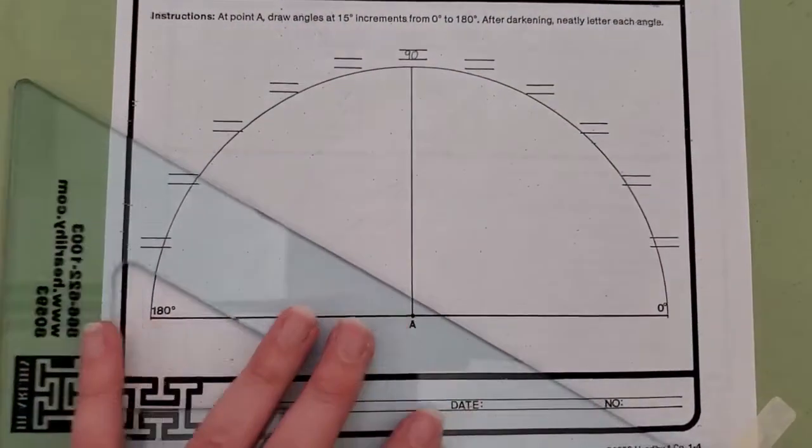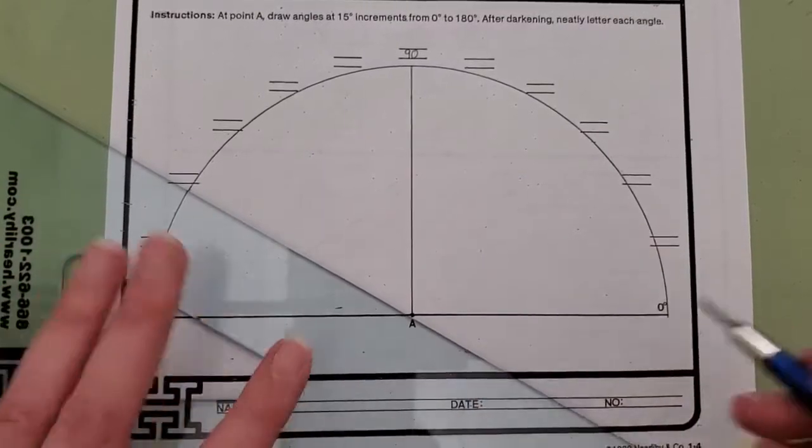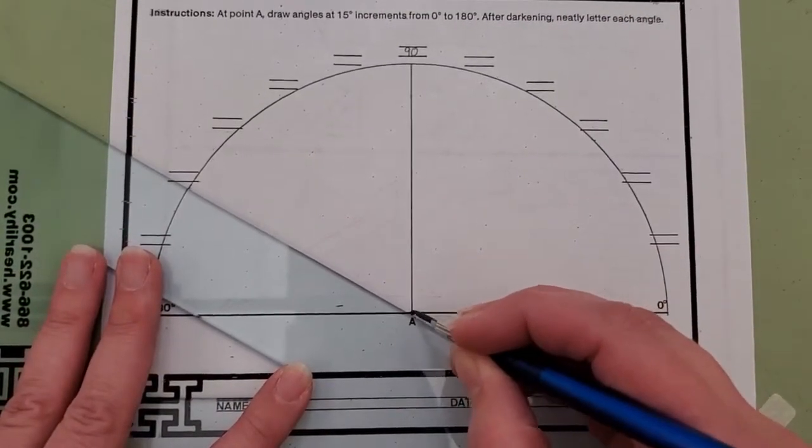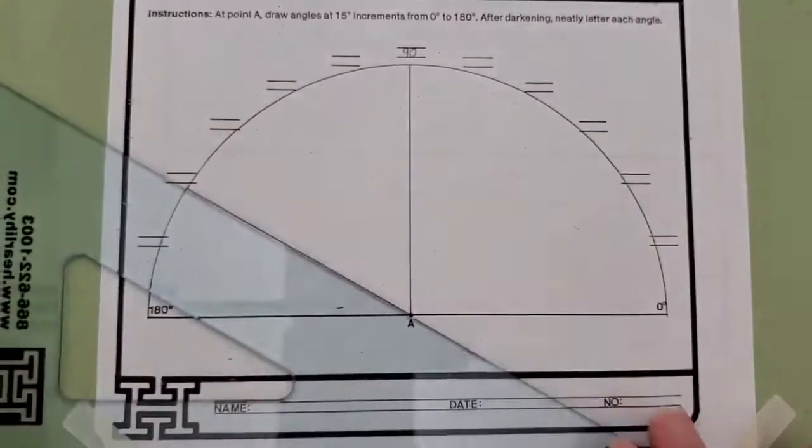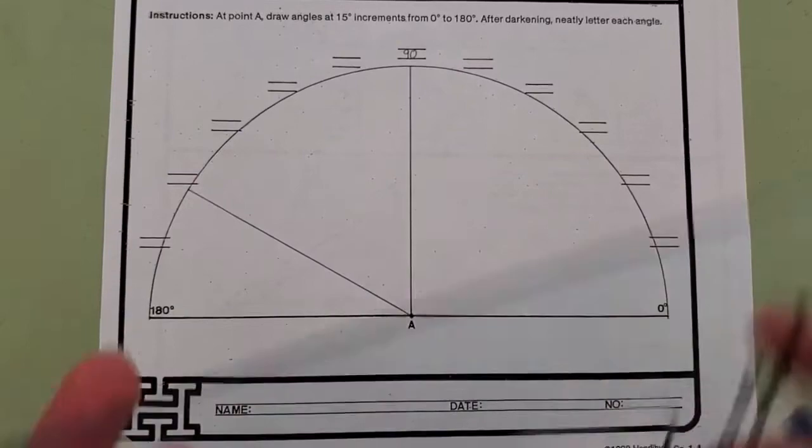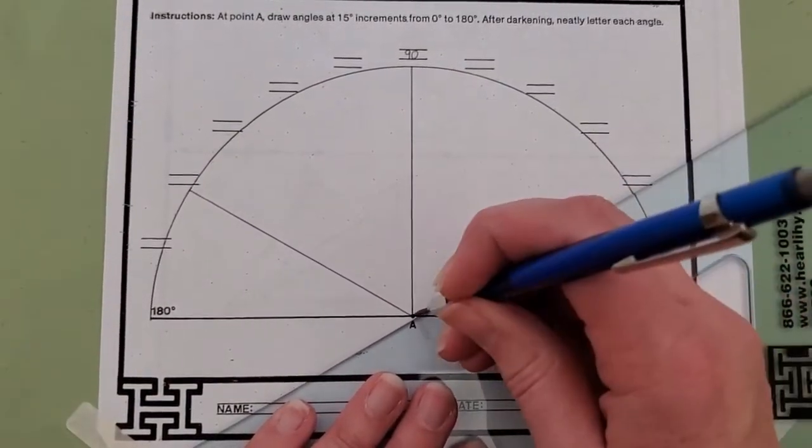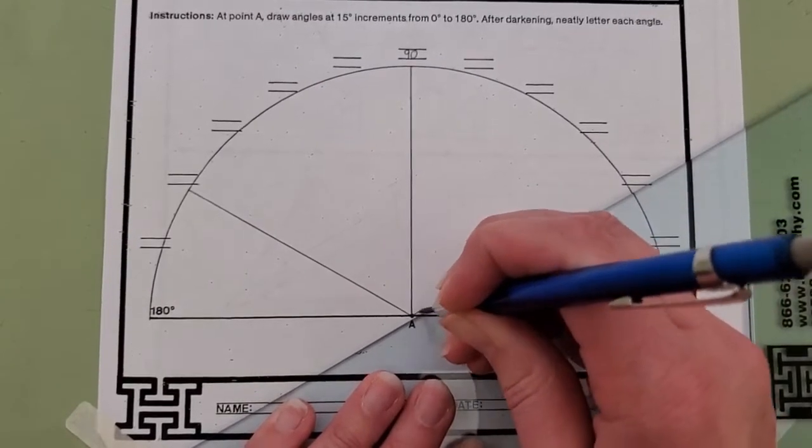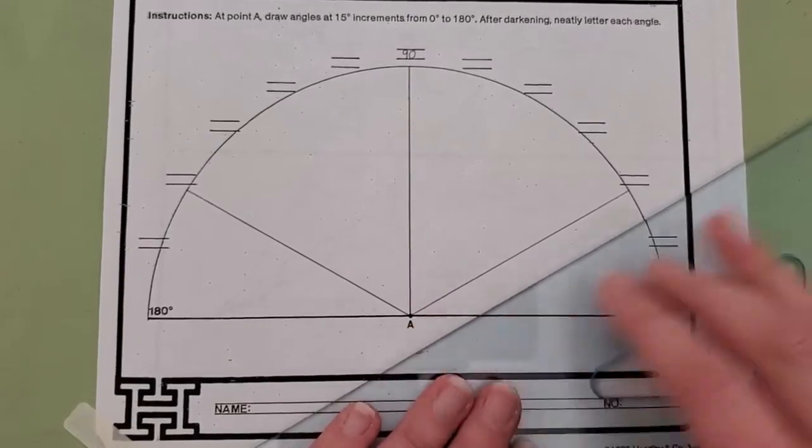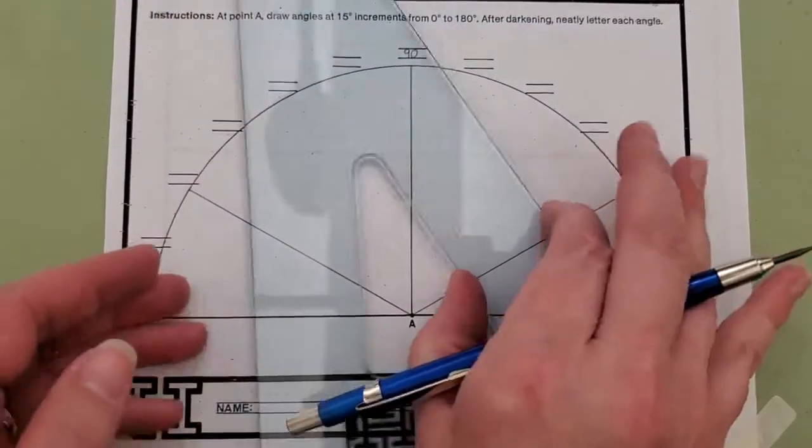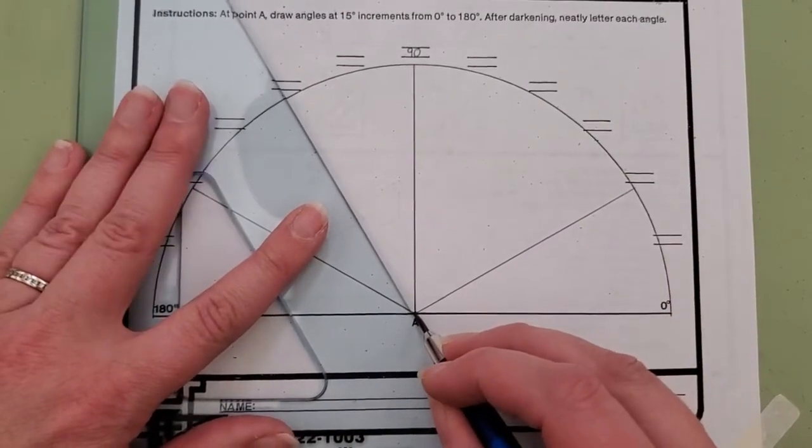But what they don't think about is that you can use the triangle in both directions to get specific measurements. So I can bring it out to the left, flip it over, and make sure all of your points start at the center point A. Now we're going to see what measurements I can get over here, going the opposite direction.